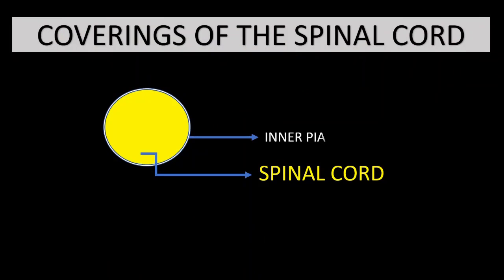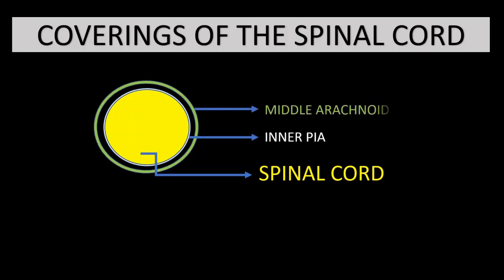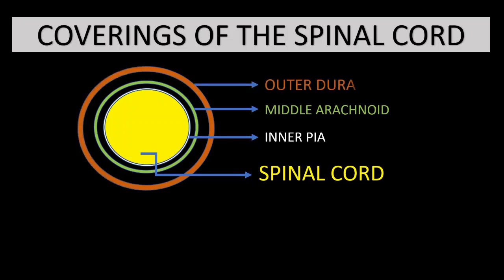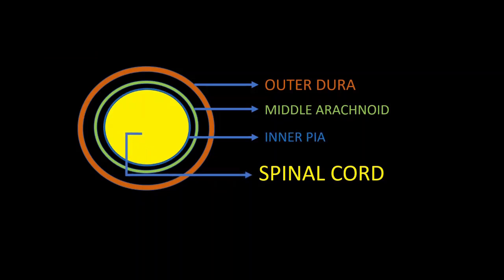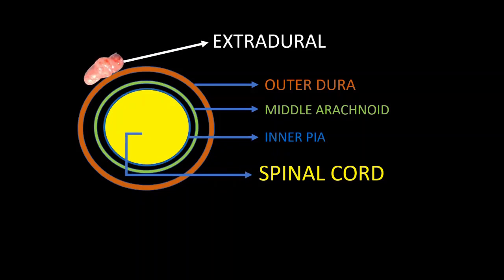Let us once again see the coverings of the spinal cord. The innermost is the pia, the middle is the arachnoid, and the outermost is the dura. So, a tumor which is present outside the dura mater is an extradural tumor.